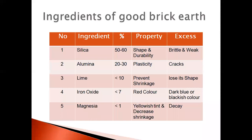To avoid all these drawbacks, we have made an artificial material known as bricks. Today let's see what are the ingredients in bricks, what is the standard size of bricks, what is the manufacturing process, and what are the tests done on bricks and its types. So first, the ingredients of good brick earth — we need to know what are the ingredients of a brick. Basically, silica and alumina are the main ingredients.